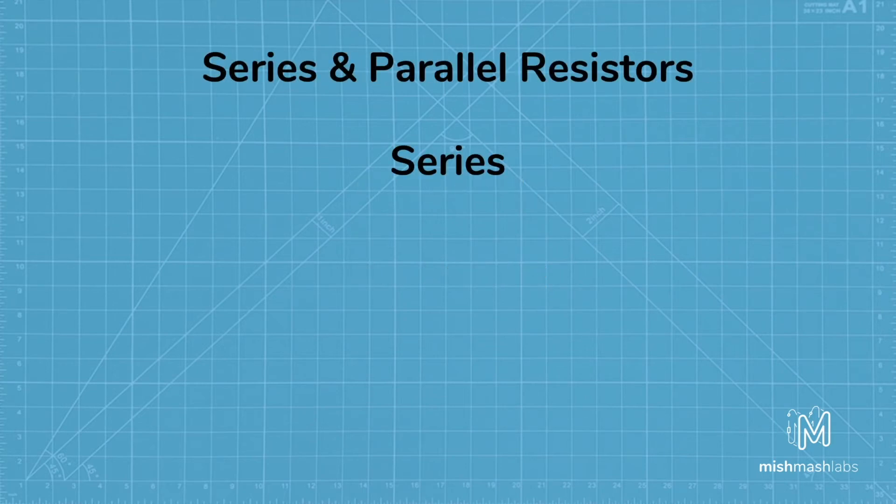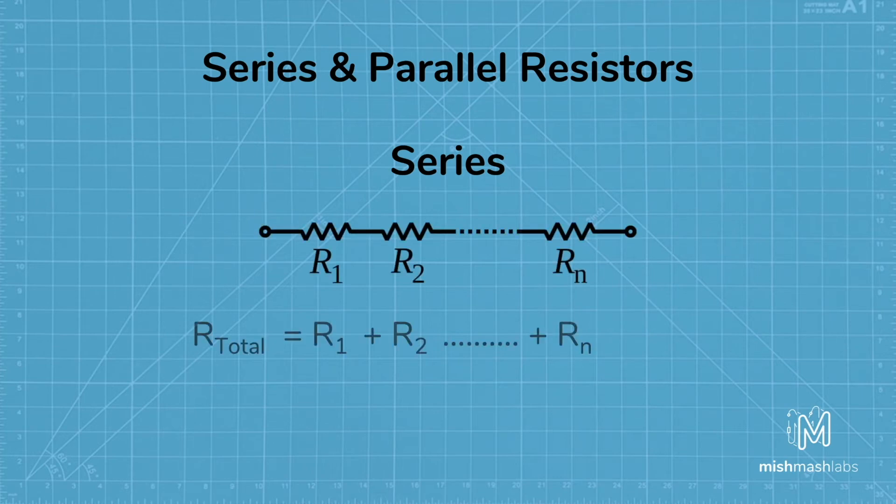Next we'll look at how to calculate resistance in series and parallel. When multiple resistors are placed in series, you simply add the resistor values together to get the total resistance.